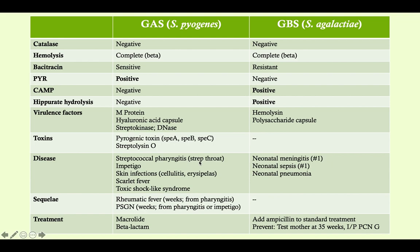Diseases from group A strep: strep pharyngitis presents with mild fever, sore throat, and tonsillar exudates. Impetigo presents as honey-crusted lesions and can also be caused by staph. Cellulitis and erysipelas both give warmth and tenderness, but cellulitis has indistinct margins while erysipelas has very abrupt margins. Scarlet fever presents with fever and a sandpaper-like rash.